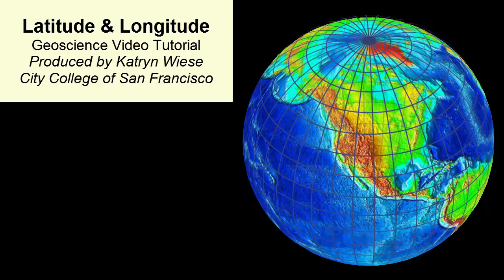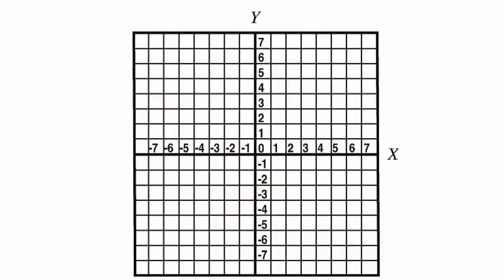Imagine we're doing fieldwork in the middle of the oceans or deep in a mountain range. How can we describe our location in such a way that there is no confusion? How can we uniquely locate ourselves on Earth's surface? We use a spherical coordinate system known as latitude and longitude.